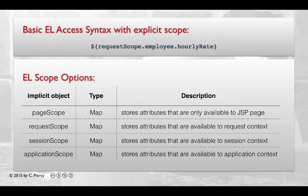Now expression language treats all of these as a map. That means if we provide a key, such as the property name, it will return a result. We'll talk more about maps in the next slide. For now, notice that we have four implicit objects that deal with the scope of the attribute.